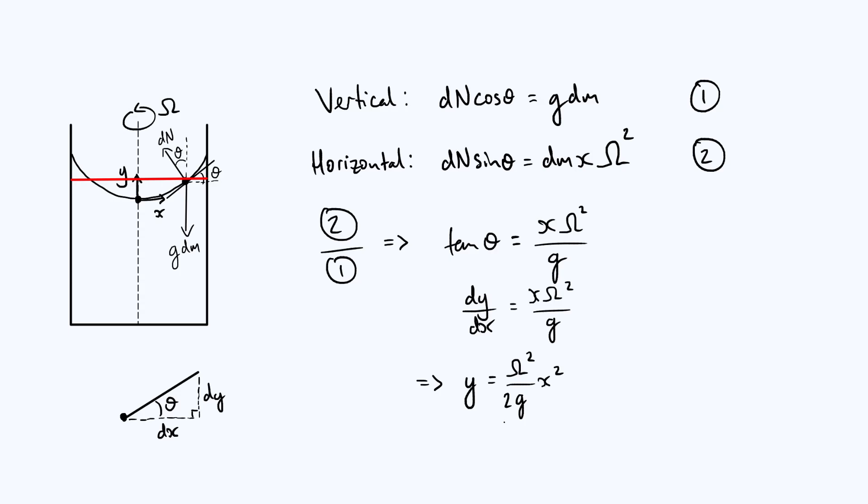Also note that the dependence of our result on both omega and g kind of makes intuitive sense. If you make omega bigger, you spin it faster, then you're increasing the centrifugal force from the perspective of an individual liquid particle. That would tend to push the particles further outwards and increase the curvature of your parabola, which is consistent with the maths because omega is on the top of the fraction. If we increase g, then gravity would have more of a dominant effect, it would be harder to get a curved surface in a bigger gravitational field, and that's again reflected in the fact that g is on the denominator of the expression, so it's consistent with our intuition.